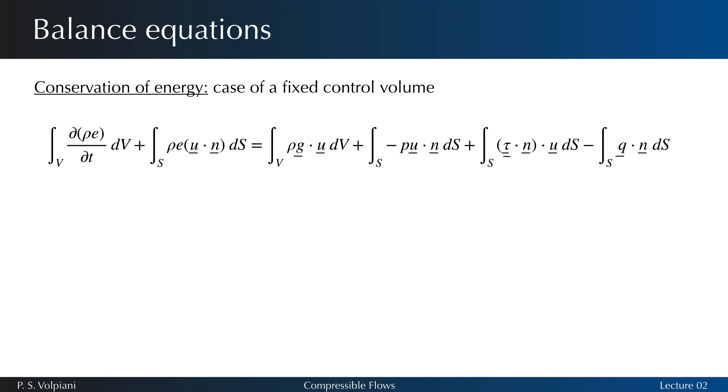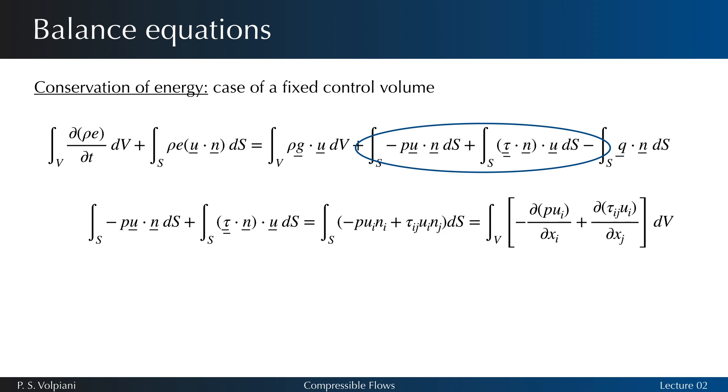To obtain the differential form of the energy conservation equation, we start from the integral form and transform the surface integrals into volume integrals. Here, we implicitly assume the continuity of the flow on the control volume V. We have the following expressions for the work per unit of time and the heat flow per unit of time. From this, we deduce the conservative form of the energy equation.